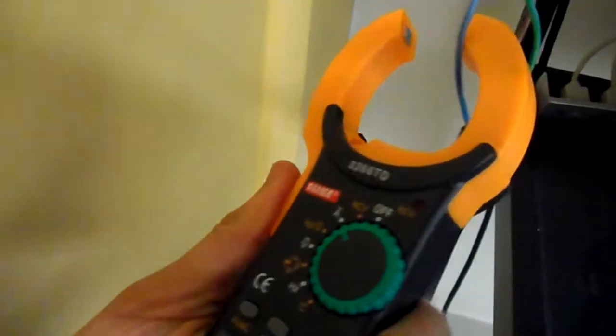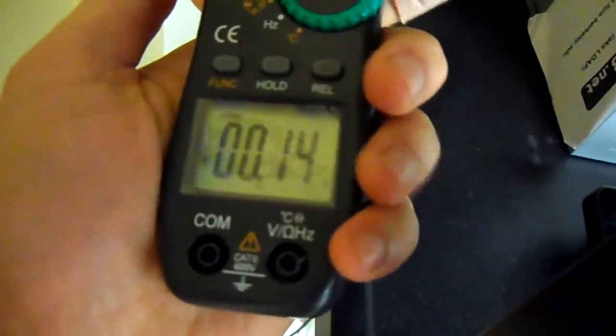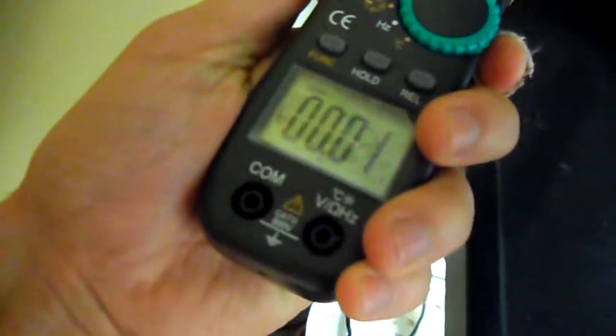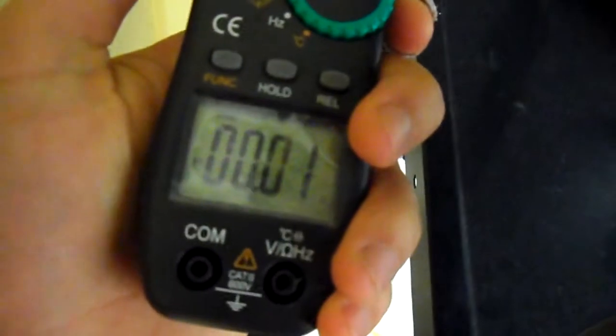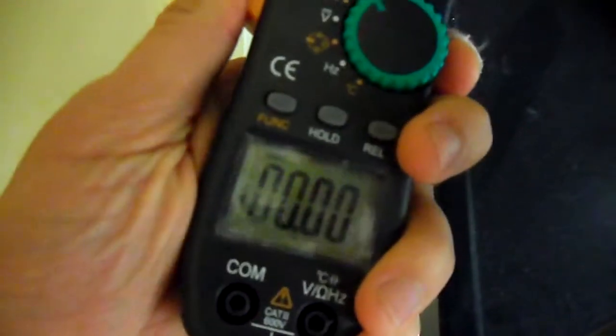If you clamp around the supply or around the return, you get the same value, which makes sense. If you clamp around the ground, as long as your equipment is operating correctly, there should be no current flowing here, unless there's a fault of some sort. So that's a good thing.